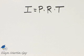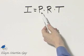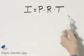For this example, we're looking for simple interest, so remember your simple interest formula. Simple interest is equal to principal times rate times time.